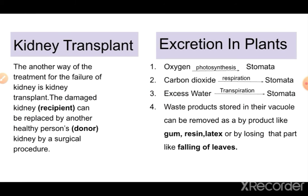Another way of treating kidney failure is kidney transplant. Kidney transplant is a process in which a healthy person can donate one kidney to a patient who has both kidneys damaged. The person who donates the kidney is known as the donor, and the person who receives the kidney is known as the recipient. The disadvantage of this process is that there are a lot of compatibility tests before undergoing kidney transplant.